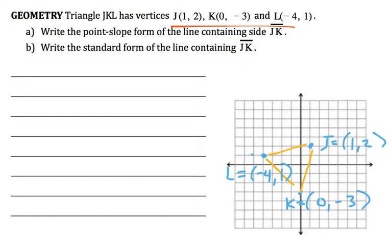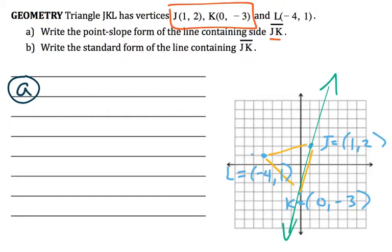In the instructions we're told to write the point slope form of the line containing side JK. Since they're focusing us on JK that means we're really just interested in these two points. And just like we did on the previous problem, let's go ahead and make this match. In finding the point slope form of the line we know that this is our target: y minus y1 equals m times x minus x1.